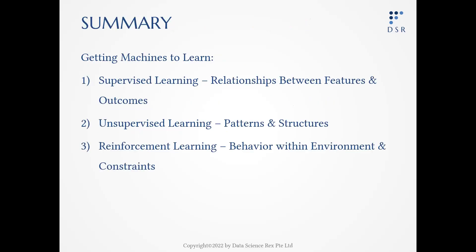In summary, machine learning is about getting the machine to learn the relationship between features and outcomes in supervised learning, learning patterns and structures for unsupervised learning, and as for reinforcement learning, it is about learning a set of behavior given the environment and constraints.